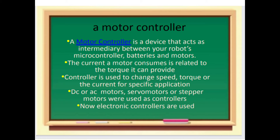Today I am discussing only the first unit of this subject. So now let's start — what is a motor controller? The first unit is Industrial Motor Control. A motor controller is a device that acts as an intermediary between your robot's microcontroller, batteries, and motors.